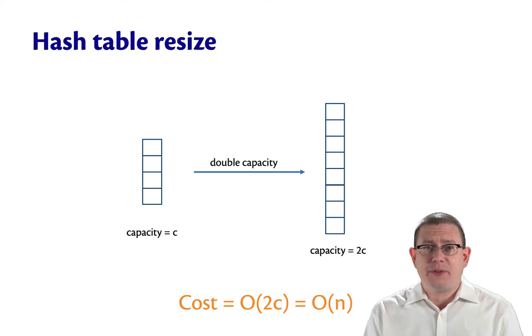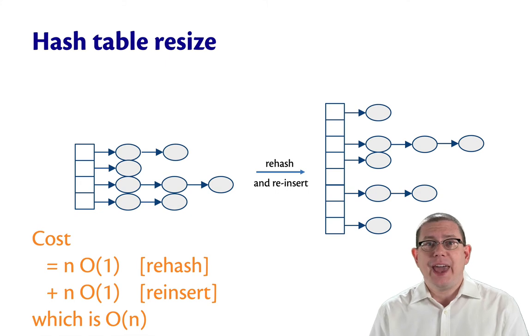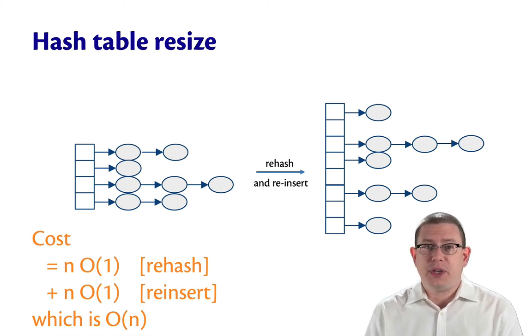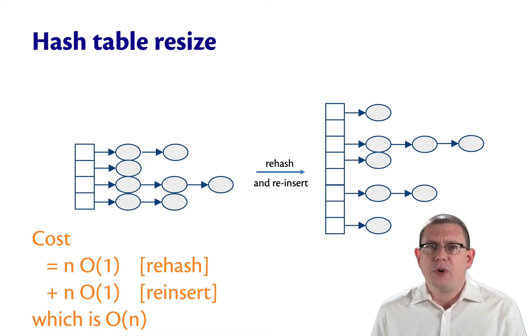And we're not even done after allocating the new array. We also have to rehash and reinsert every element from the original array into the new array. That causes where each binding is, in terms of what bucket it's in, to perhaps change. Because the hash function will now be used to map that binding, that key, into the buckets again. And we're going to take that modulo a new array length. So, it's not as simple as just copying the buckets over. We actually have to do the rehash on every key.